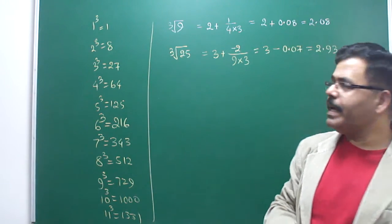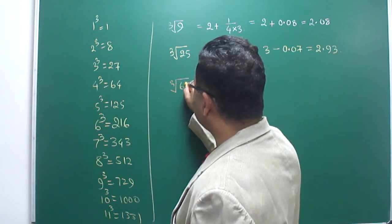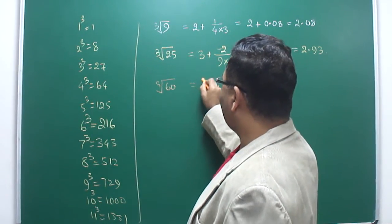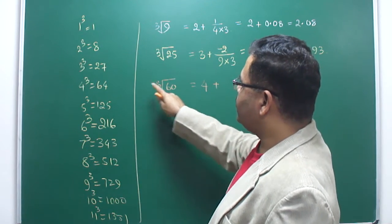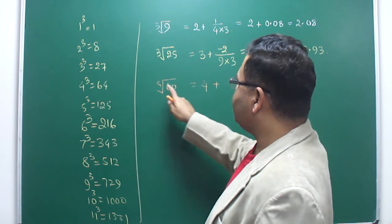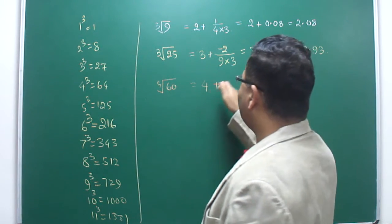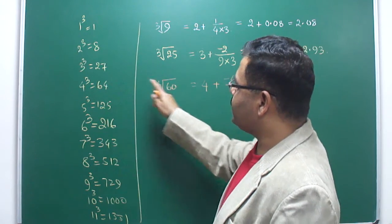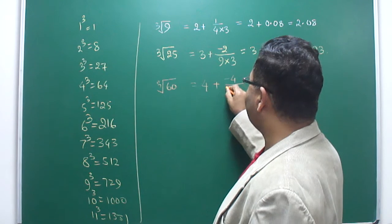Some other examples: cube root of 60. 60 is closer to 64, so I can take 4 as a reference. This number is less than 64, so it will be minus 4. The difference is 60 minus 64, which is minus 4.